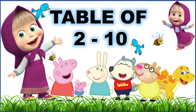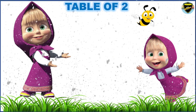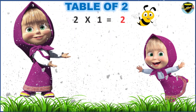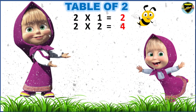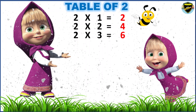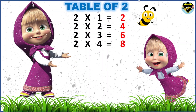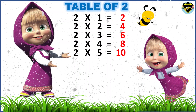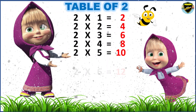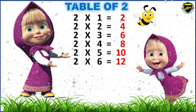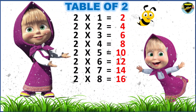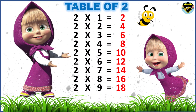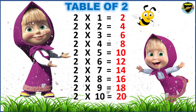Let's learn the table of two to ten. Starting with the table of two. Two ones are two. Two twos are four. Two threes are six. Two fours are eight. Two fives are ten. Two sixes are twelve. Two sevens are fourteen. Two eights are sixteen. Two nines are eighteen. Two tens are twenty.